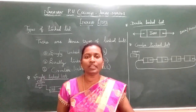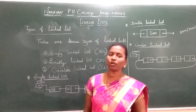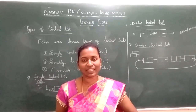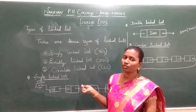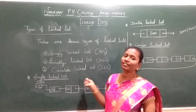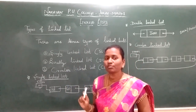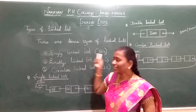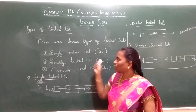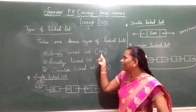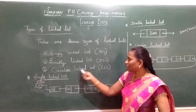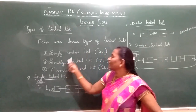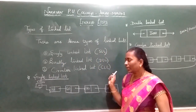Now we will see the types of linked list — very important for your 5-mark questions. They may ask you types of linked list. There are only 3 types: singly linked list (SLL), doubly linked list (DLL), and circular linked list (CLL). In queues we have 4 types, whereas in linked list we have only 3 types.